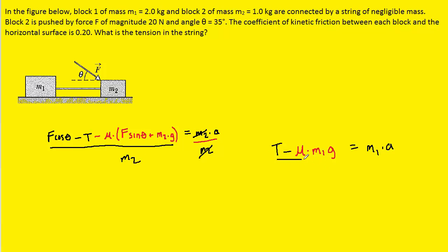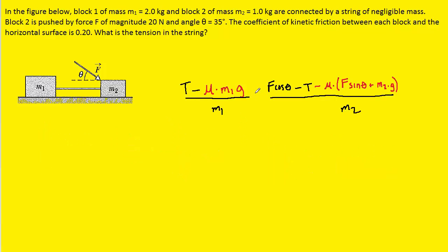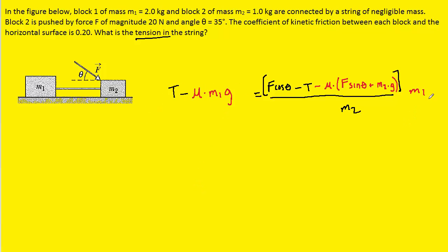We'll do the same thing over in this equation — divide both sides by m1 so it cancels out on the right-hand side. So we can take this expression for acceleration and set it equal to this expression for acceleration. Our goal is to find the tension, so we're trying to solve for t. We could first multiply both sides of the equation by m1 so it cancels out on the left-hand side, and then multiply both sides by m2 so it cancels out on the right-hand side. Make sure to put parentheses around this term.